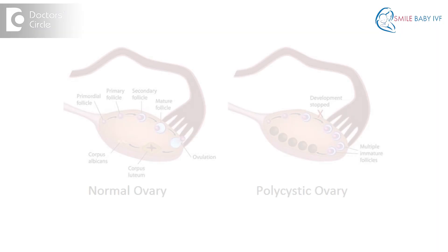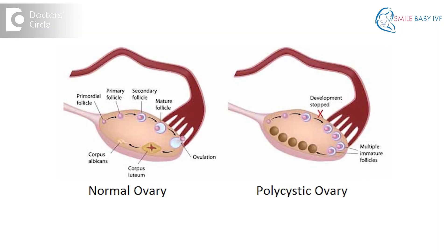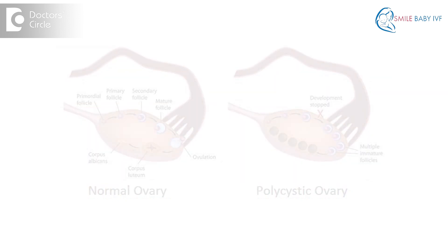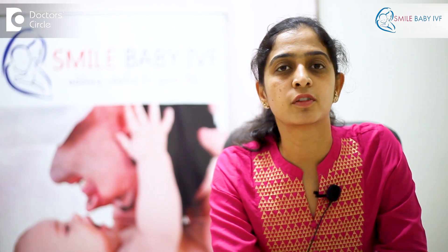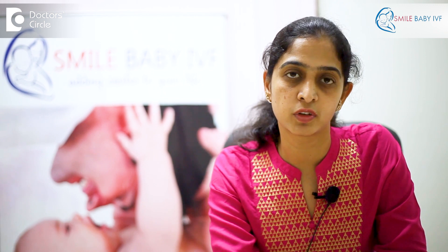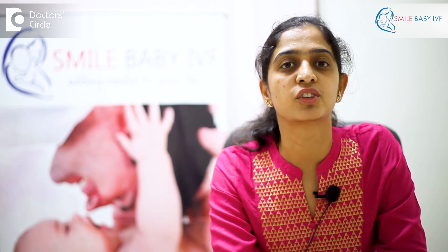It is seen in people who are overweight, in people with polycystic ovarian disease, and those with insulin resistance syndrome. All these people have infertility associated with their conditions.